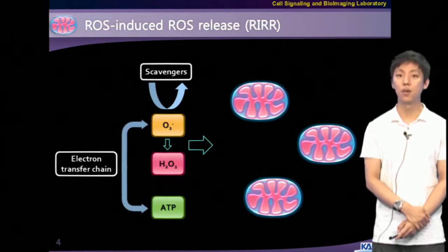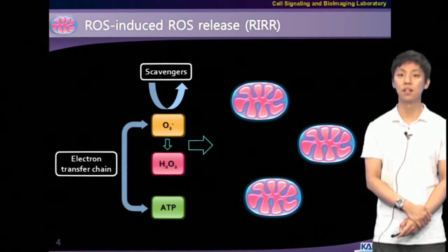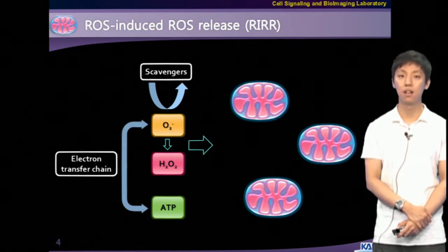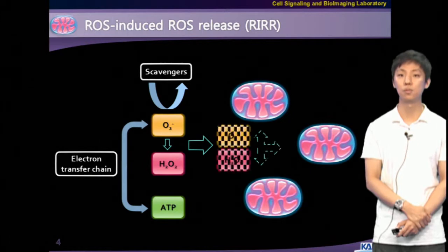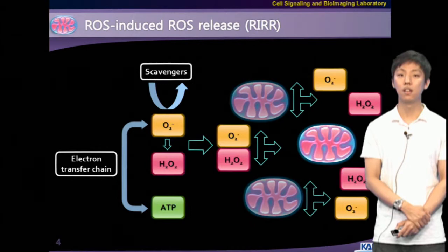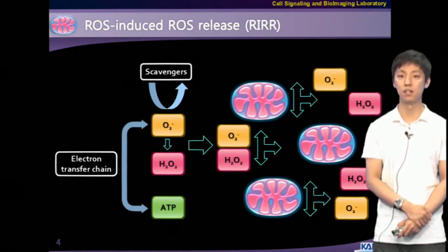Production of ROS in mitochondria is accelerated by ROS themselves. This phenomenon is called ROS-induced ROS release, or RIRR, and ROS generation in only small numbers of damaged mitochondria can affect neighboring mitochondria, eventually propagating the ROS burst to the whole cell and affecting cell viability through this positive feedback loop.